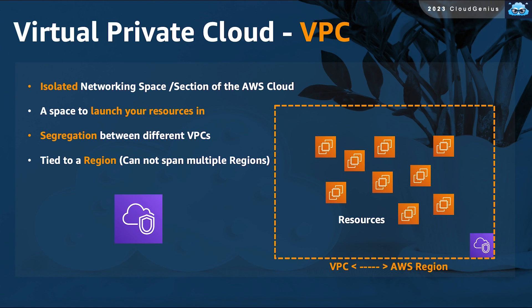The VPC is tied to one AWS region only and cannot span multiple regions, but can span multiple Availability Zones within that region.